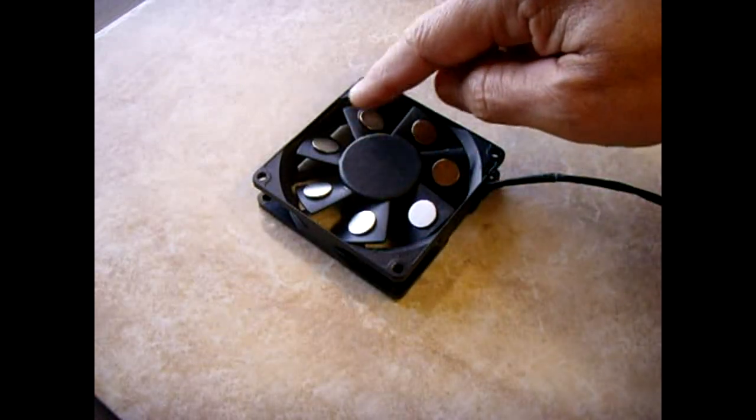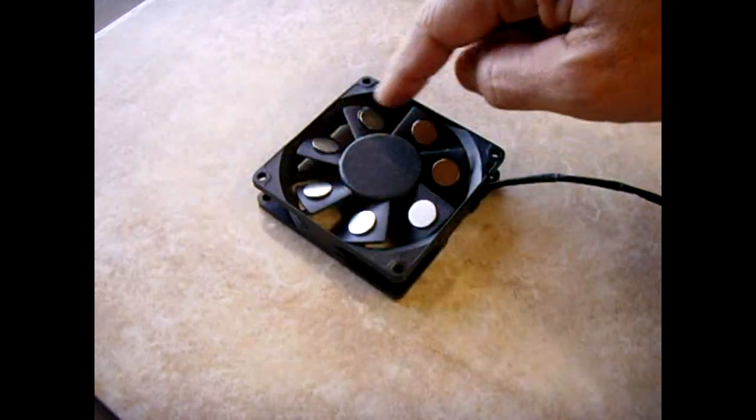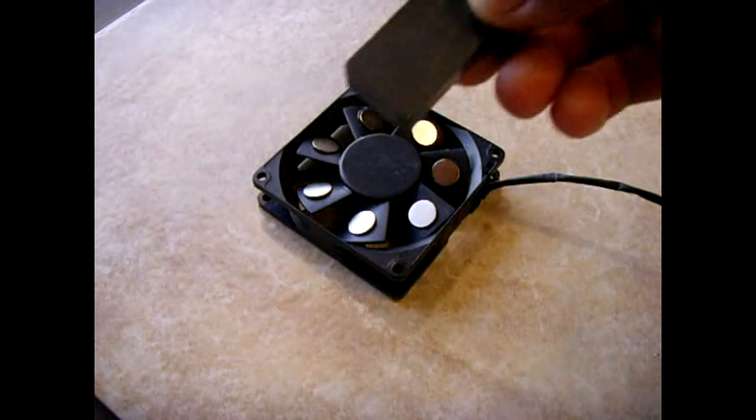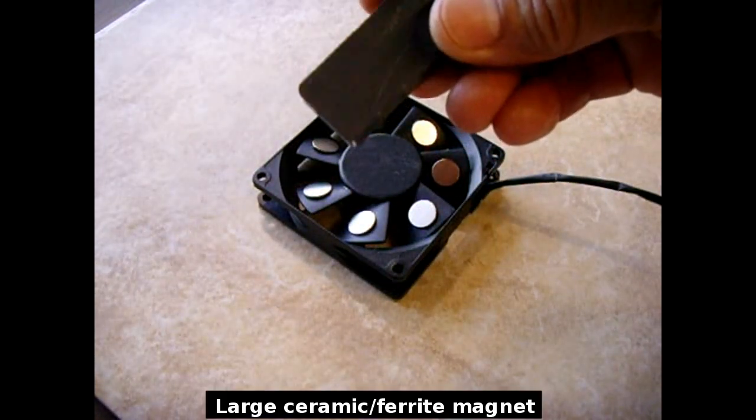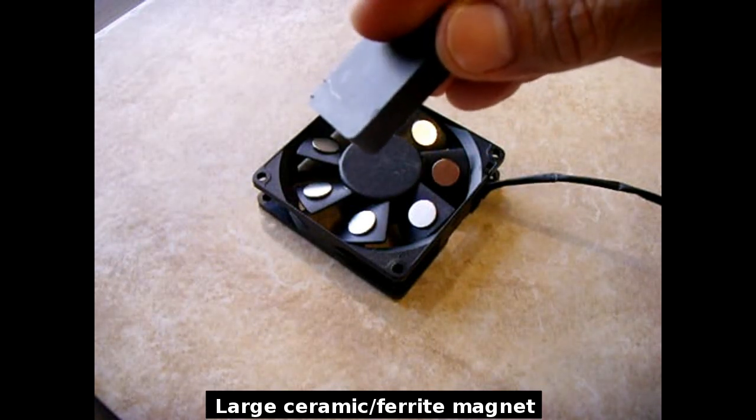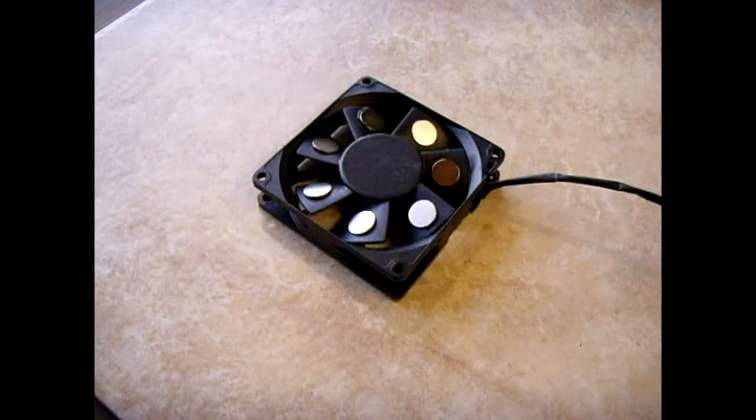All of these magnets are faced the same way, all facing north or all of them facing south. And when you bring in a magnet like this within close proximity to the fan, the similar pole will oppose the fan causing it to spin.